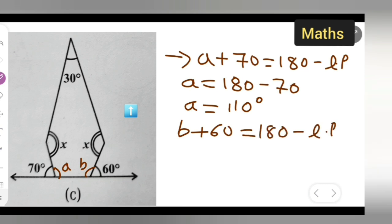b plus 60 equals 180. That is again a linear pair, so b equals 180 minus 60, which gives you b equals 120. Now we can easily add the interiors: 30 plus x plus x plus a and b.